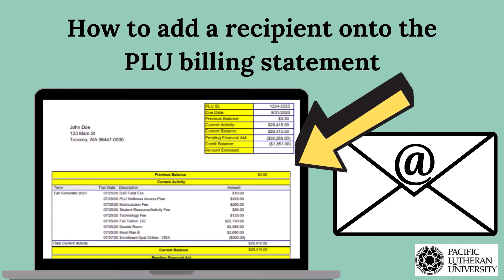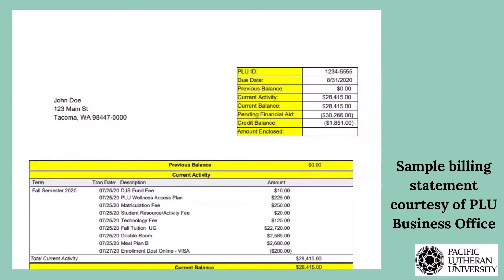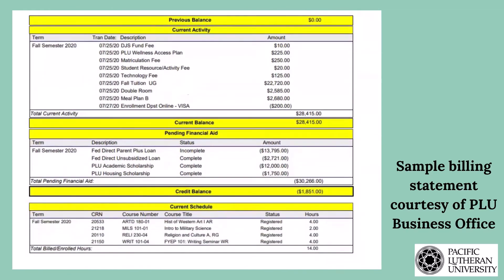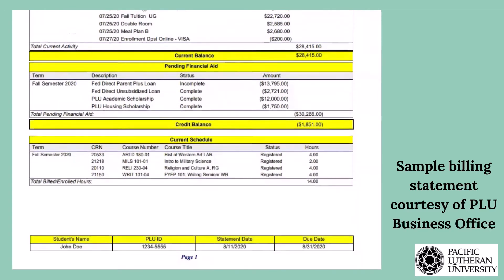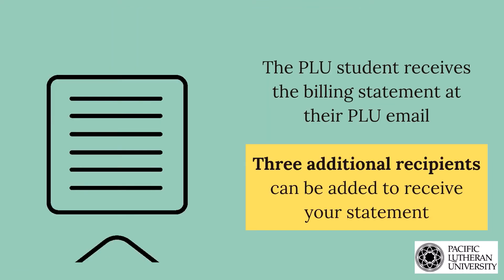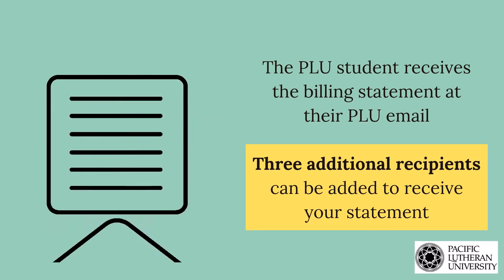Hey Lutes! As you know, the billing statement is sent out monthly by the PLU Business Office. This statement has essential information, including your current account balance. It also shows your charges and financial aid that has been paid and reversed on your account. The Business Office sends this to your PLU student email, but did you know you can select up to three others to receive your e-billing statement?